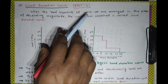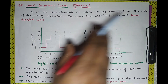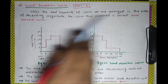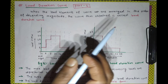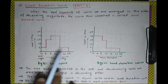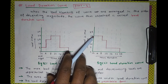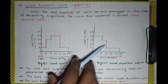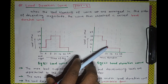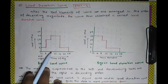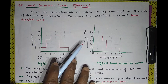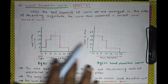When the load elements of a curve are arranged in order of descending magnitude, the curve thus obtained is called the load duration curve. Here the load elements are arranged in descending order, and this curve is known as the load duration curve. This is our load curve, and this is the load duration curve. Let's understand the difference between these two curves.